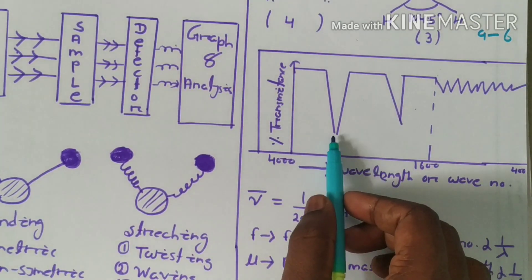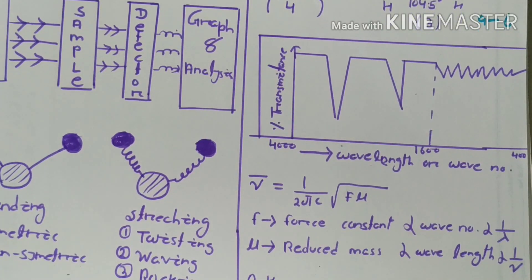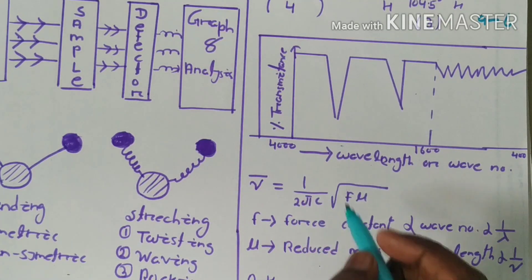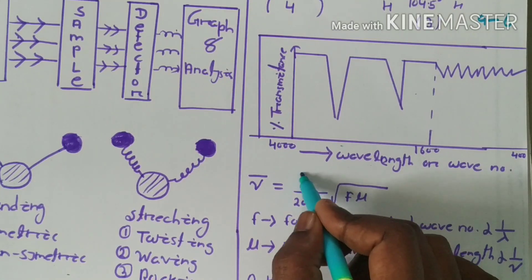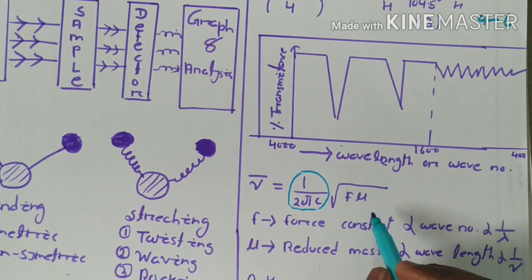The stretching frequency has a formula: stretching frequency equals 1 over 2πc times the square root of f over μ. This part is constant, so the factors affecting the stretching frequency are f and μ.